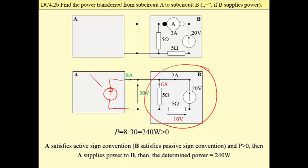This voltage source satisfies active sign convention, which means that subcircuit A supplies 240 watts power and subcircuit B absorbs this power.